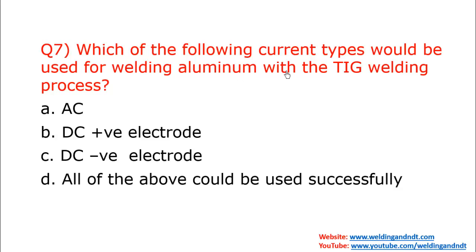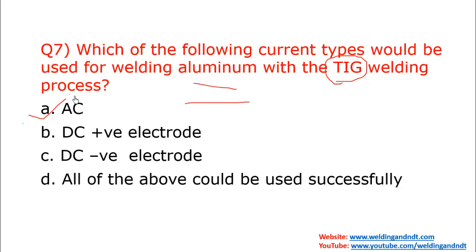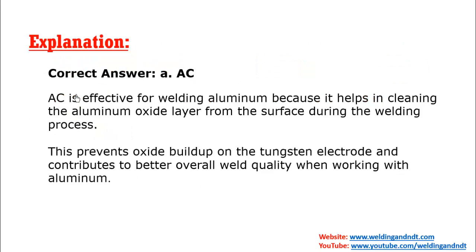Question number seven: which current type would be used for welding aluminum with TIG welding? When you are using TIG welding for aluminum, you will use AC current — alternating current. Because a layer of aluminum oxide forms on the surface of aluminum, when you use AC current, that aluminum oxide layer will be cleaned automatically. AC is effective for welding aluminum because it helps in cleaning the aluminum oxide layer from the surface during the welding process.